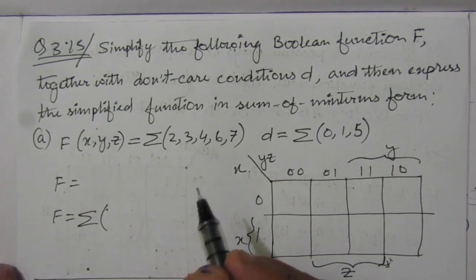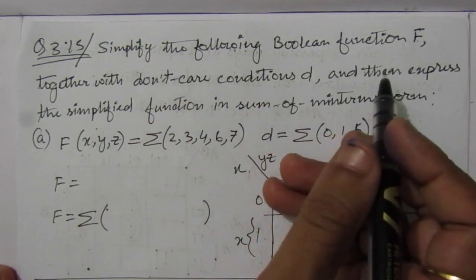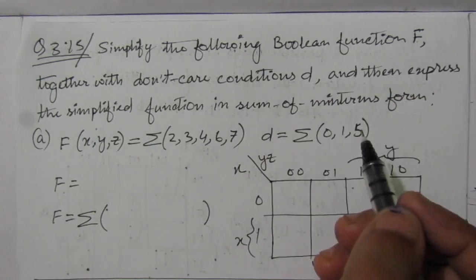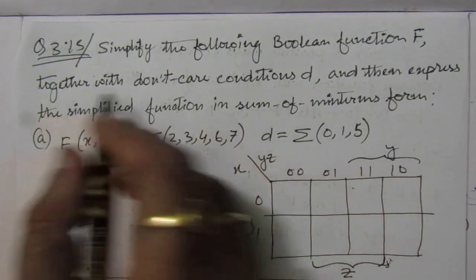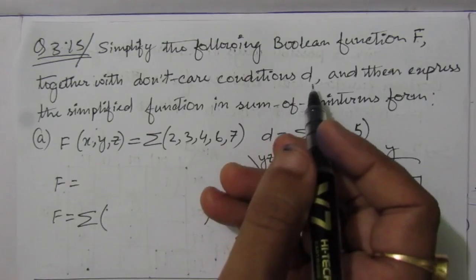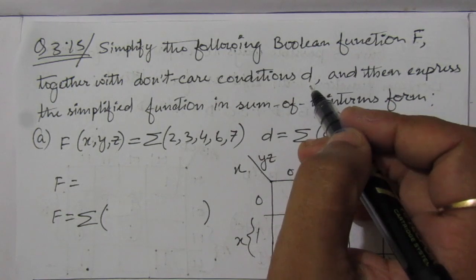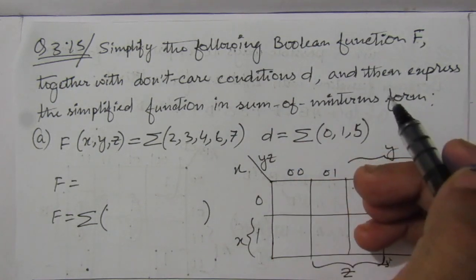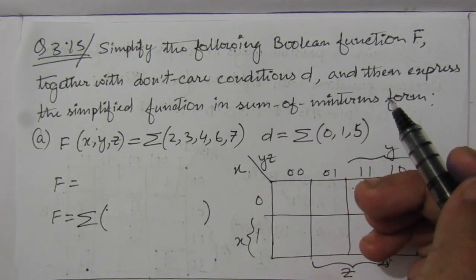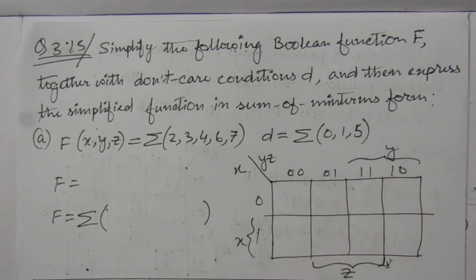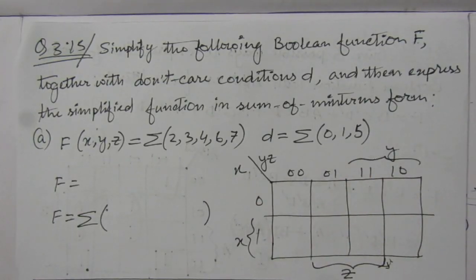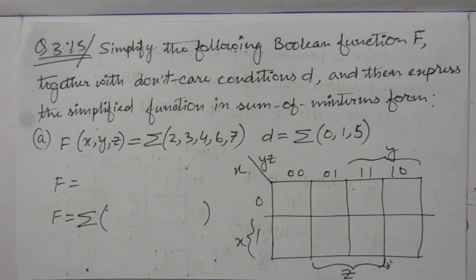The problem is: simplify the following boolean function F. We have four boolean functions together with don't care conditions d. That means along with function F, we are given with don't care conditions. We have to express the simplified function in sum of minterms form, considering both the function and don't care conditions.